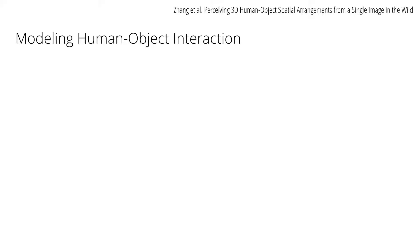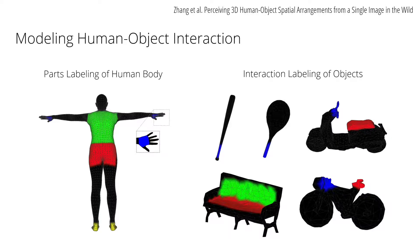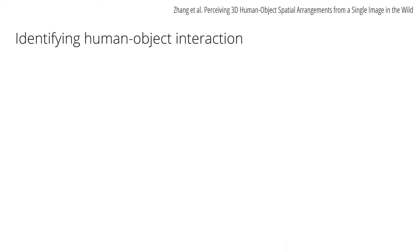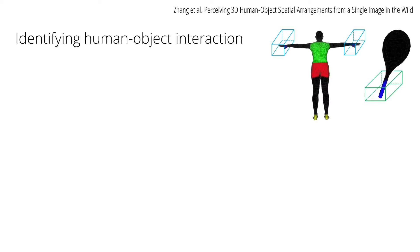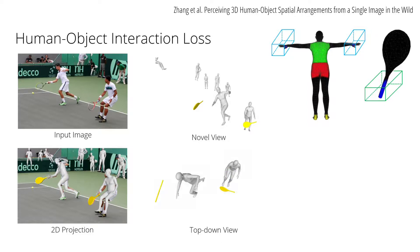To model human-object interaction, we take inspiration from PROX and use a parts labeling approach. We label contact regions on the human body and on each object mesh to encode common modes of interaction. For example, people usually grab tennis rackets by the handle using their hands, or sit on bicycles with their bottom on the seat. To identify human-object interaction, we first determine if two parts interact using 3D bounding boxes. As shown here, the handle of the tennis racket and the hand of the person are not in contact, but their 3D bounding boxes overlap. We identify this as a human-object interaction and impose our loss which pulls the interacting parts closer together.